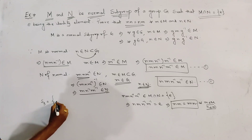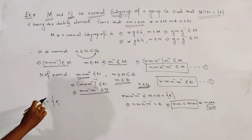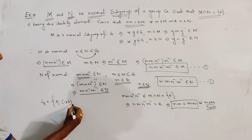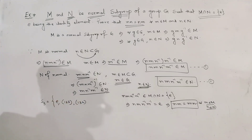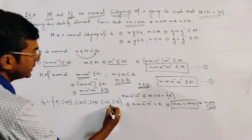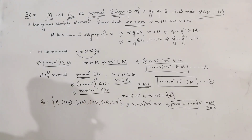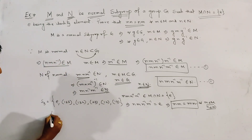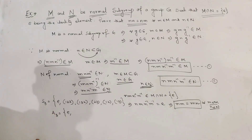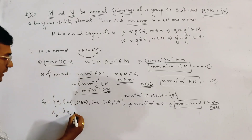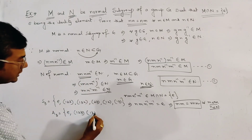This set S3 contains 6 elements: the identity permutation e, the 3-cycles (1 2 3) and (1 3 2), and the 2-cycles (2 3), (1 2), and (1 3). This is the symmetric group of order 6. We consider the subgroup A3, the alternating group on 3 symbols, which consists of the even permutations only: {e, (1 2 3), (1 3 2)}. A3 is a normal subgroup of S3.